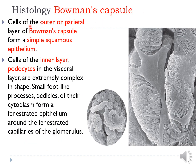The cells of the outer parietal layer of the Bowman's capsule are simple squamous epithelial cells. The cells of the inner visceral layer are podocytes, which surround the blood vessels and are extremely complex in shape. Small foot-like processes are present, which divide again to form smaller pedicles, and their cytoplasm forms fenestrated epithelium around the fenestrated capillaries of the glomerulus.